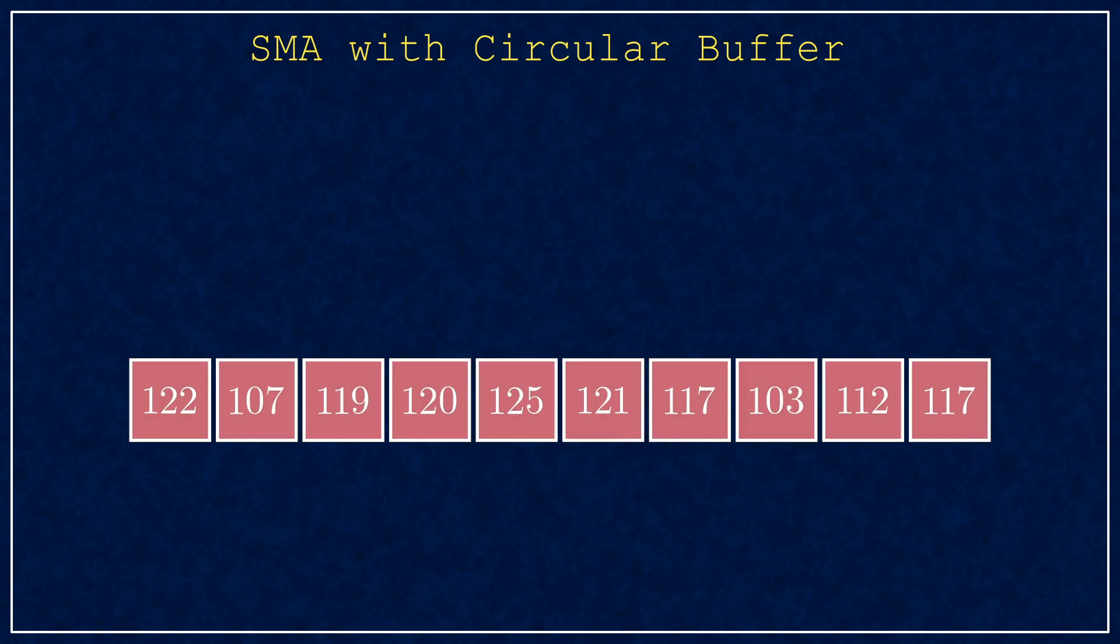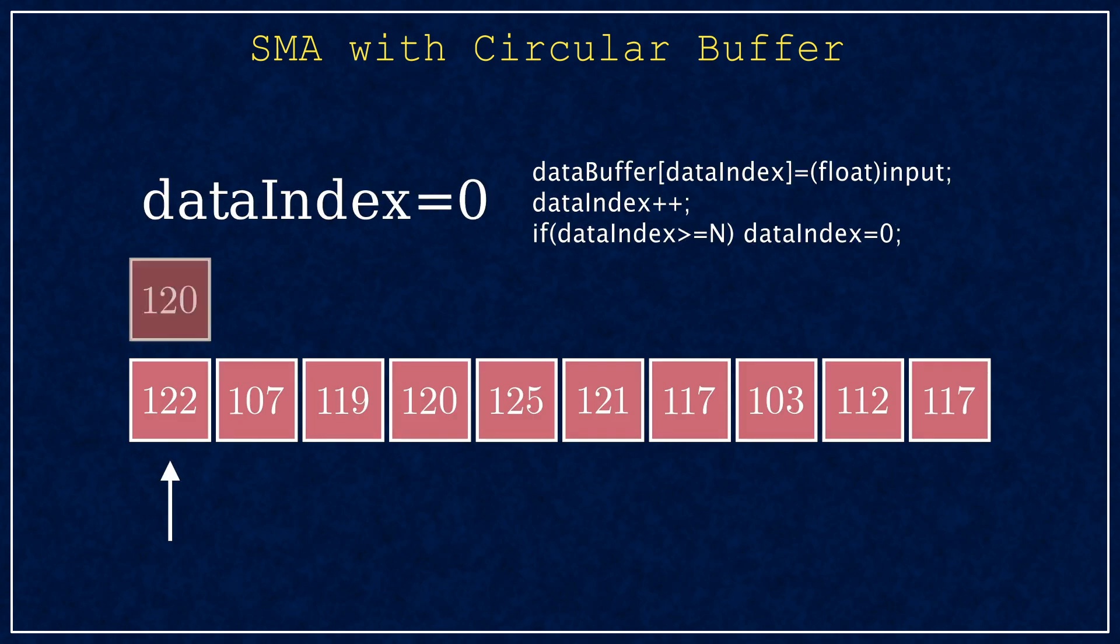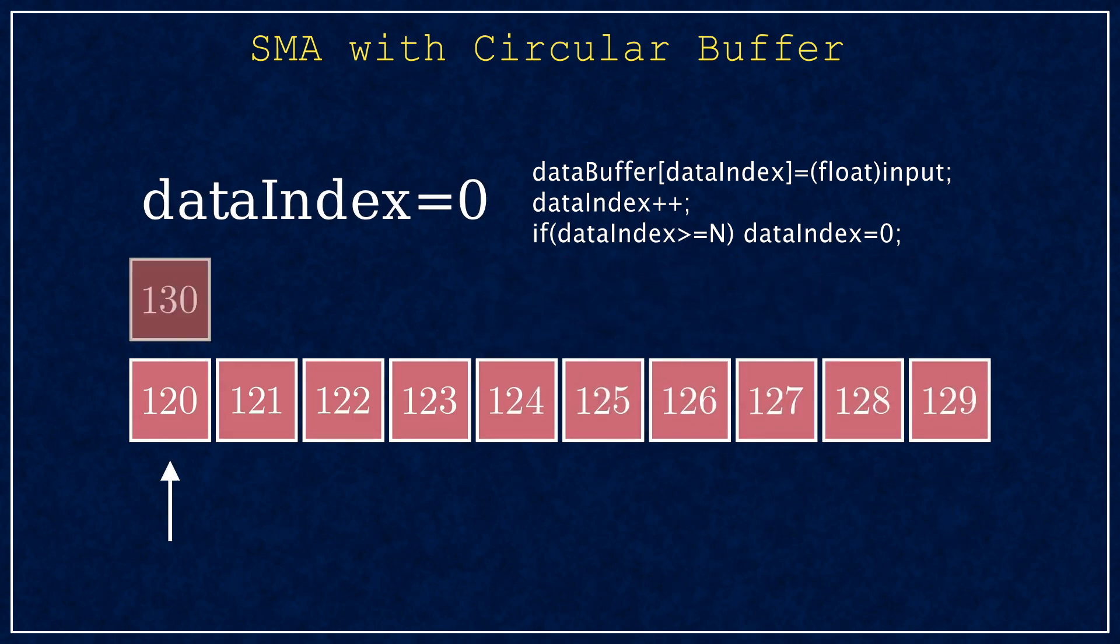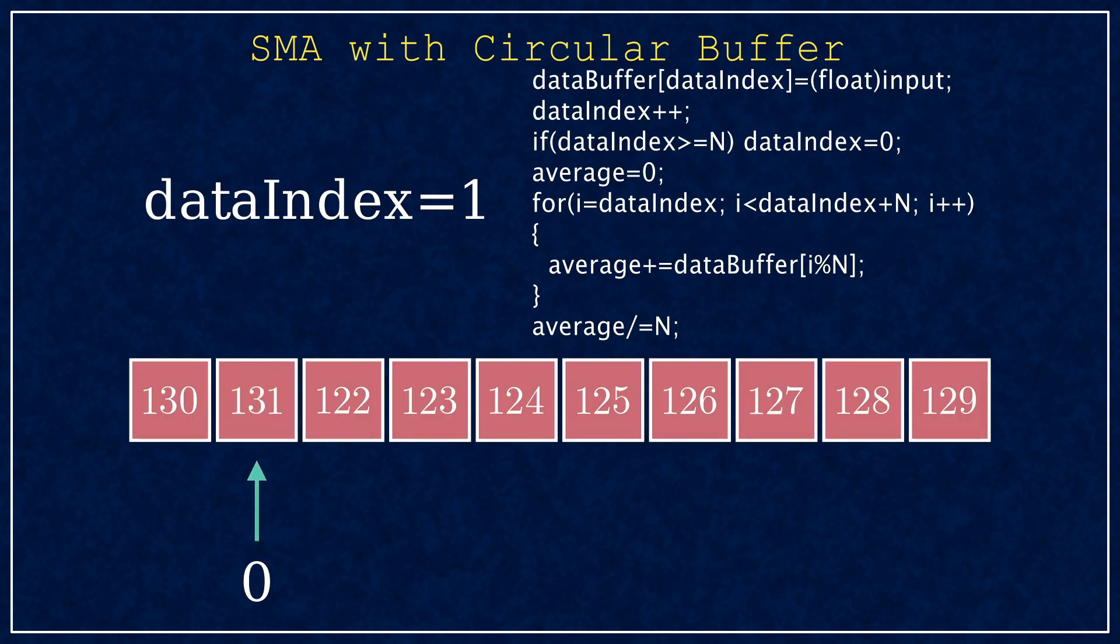Instead of keeping the newest entry always at the beginning, you keep filling the buffer. And then when you reach the end, you jump to the beginning. The key is that you keep track of the data index and you start the averaging loop next to the data index. And of course when you reach the end, you jump to the beginning. The modulo operation is your friend for indexing.